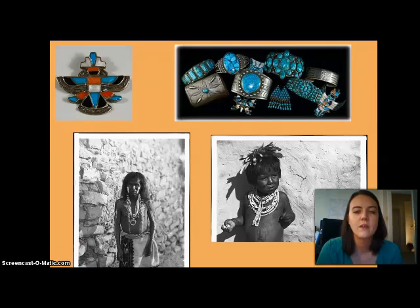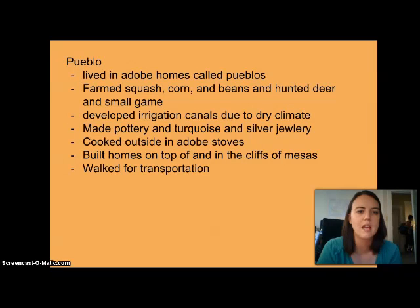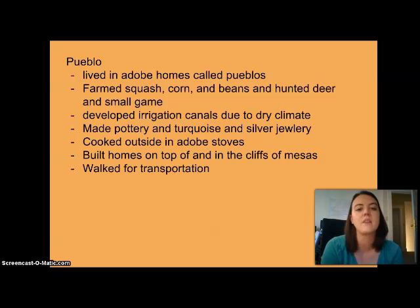The Pueblo were famous for their turquoise and silver jewelry, which they wore for religious reasons. They lived in adobe homes called pueblos, farmed squash, corn, and beans, hunted deer and small game, developed irrigation canals due to the dry climate, made pottery and turquoise and silver jewelry, cooked outside in adobe stoves, built homes on top of and into the cliffs of mesas, and relied on walking for transportation.